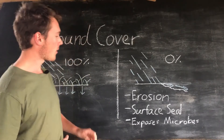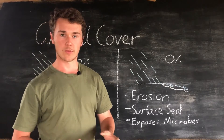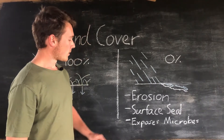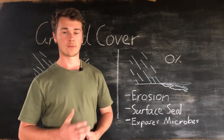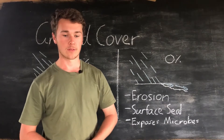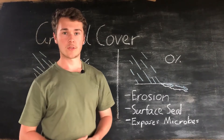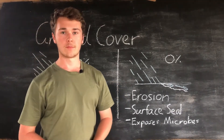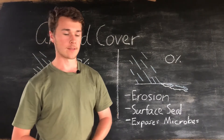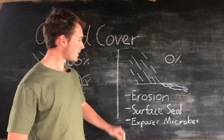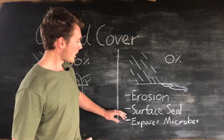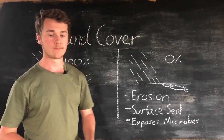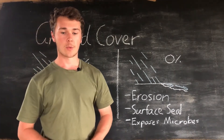Another big problem with a lack of ground cover is that it exposes our microbes to UV radiation from the sun. This can kill or reduce the functionality of our soil microbes, which have a really important role in the breakdown of organic material and recycling nutrients. So the key issues of bare soil are: increased erosion, surface seals that reduce soil infiltration rates, and exposure of microbes to UV light which reduces soil functionality.